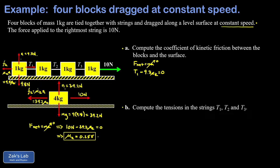Applying Newton's second law to the first block: T1 minus 9.8μk equals zero — that's our first equation. For the second block, the force diagram has one additional force: T1 is now pulling it to the left, along with friction to the left, while T2 pulls to the right. The weight and normal force are again 9.8 newtons, giving friction of 9.8μk. Newton's second law for block 2: T2 minus T1 minus 9.8μk equals zero.